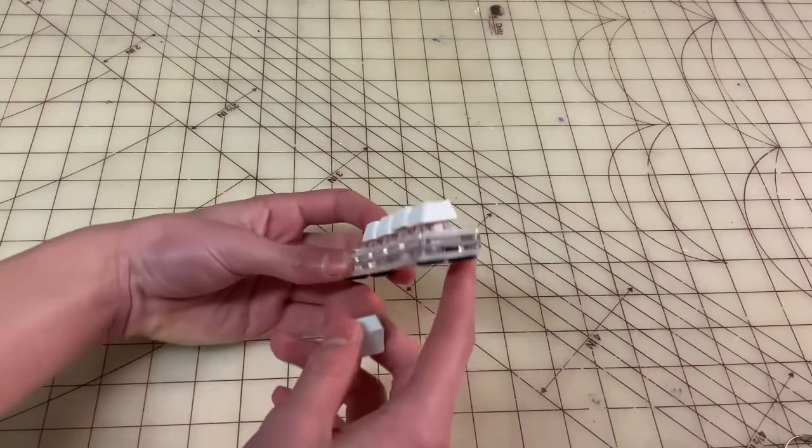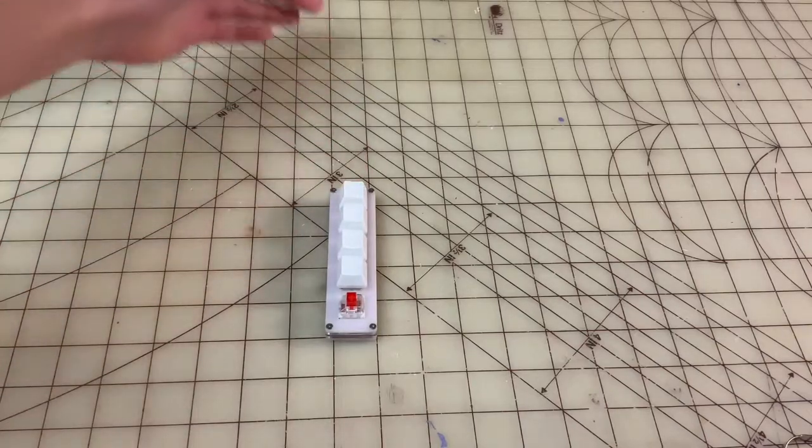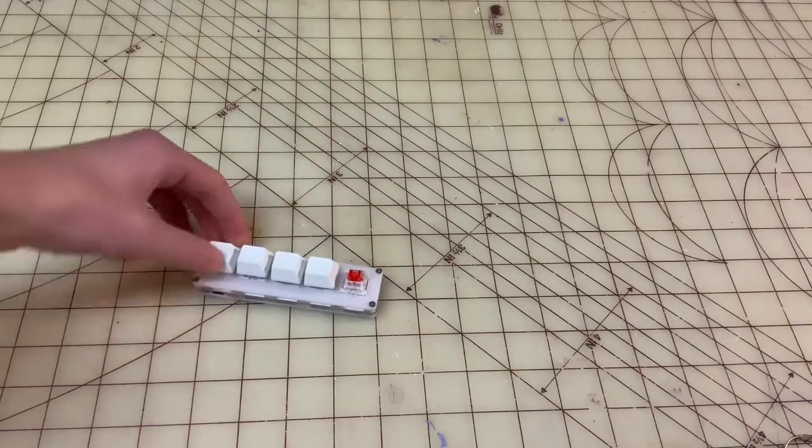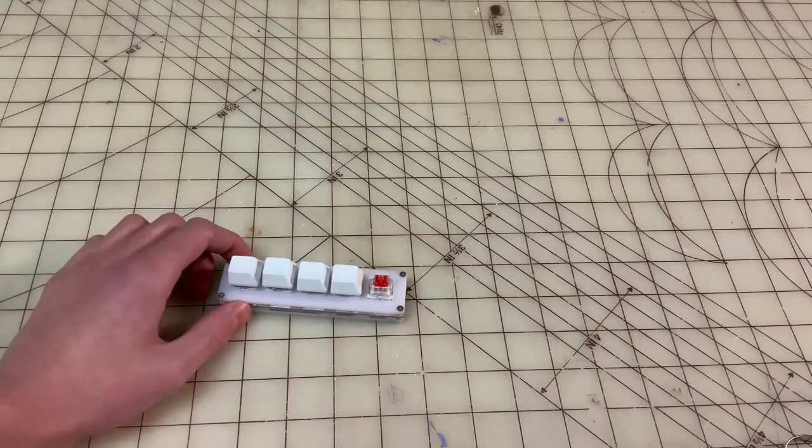Now on the top, it does have two ports, which is kind of nice because if you want the Macro Pad facing this way and the cable coming out that way, you can do that. Or if you want the cable coming out that way, you can also do that. So it's nice that they did include that.